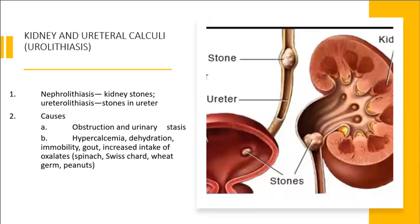Nephrolithiasis (kidney stones) and ureterolithiasis (ureteral stones) can be caused by obstruction or urinary stasis, hypercalcemia, dehydration, immobility, gout (uric acid crystallization), and increased intake of oxalates such as spinach, Swiss chard, wheat germ, and peanuts. Assessment findings include renal colic — severe flank pain for kidney stones or radiating flank pain for ureteral or bladder stones. Clients are diaphoretic, with nausea, vomiting, fever, and chills. Urinalysis reveals blood, WBCs, and bacteria.